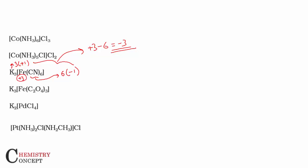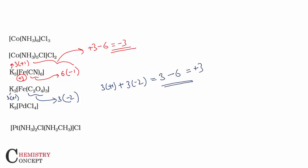Similarly, in the next example we have three potassium ions each with a charge of plus one, and three oxalate ions each with a charge of minus two. So the calculation is: three times (+1) plus three times (−2) = +3 − 6 = −3. The metal charge for iron is the opposite: iron is in the +3 oxidation state.